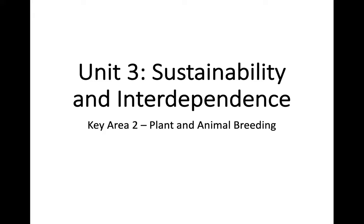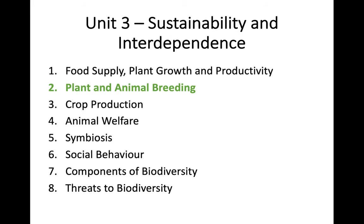Hi everyone and welcome back to Higher Biology. Today we are continuing on with the final unit, Unit 3, Sustainability and Interdependence, and we're going on to Key Area 2, which is Plant and Animal Breeding. This is quite a long video with quite a bit of information in this key area. Some of it we have already touched on in Key Area 1, so that should just be jogging your memory. You might want to break it up into chunks so you can revise certain parts.